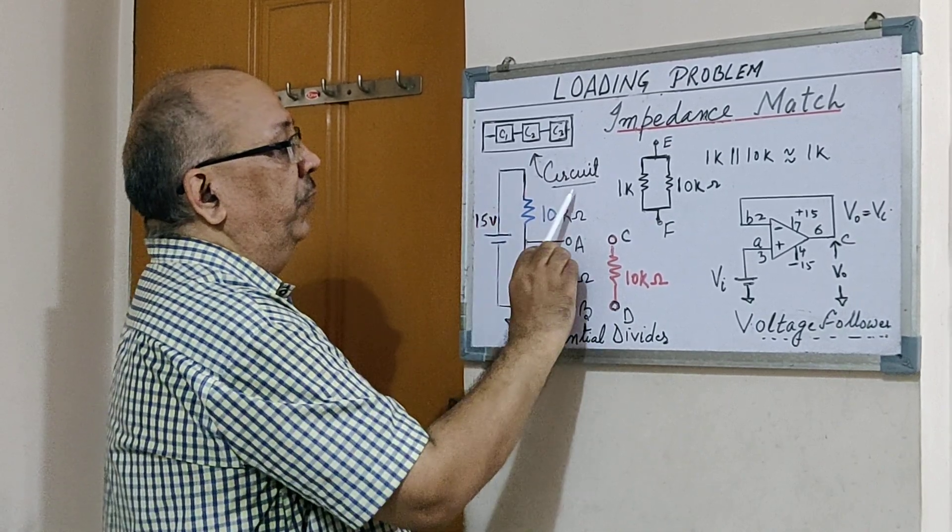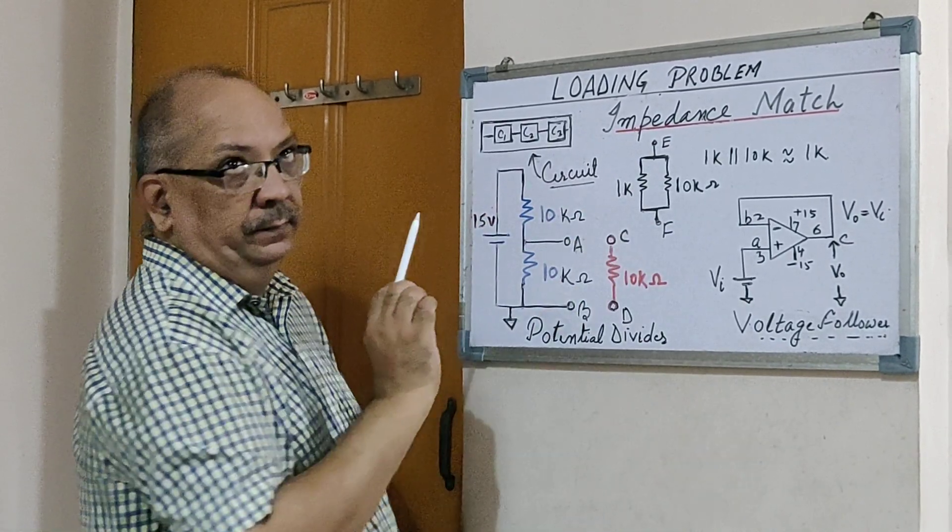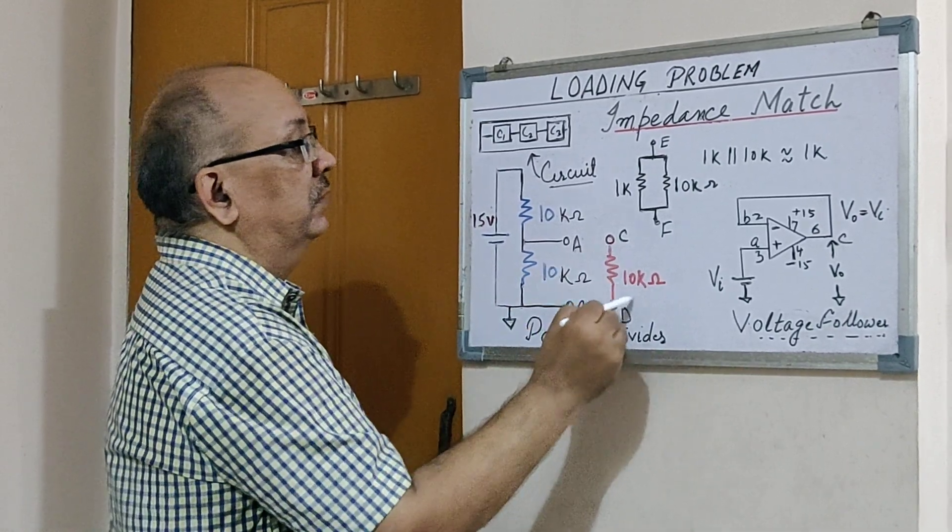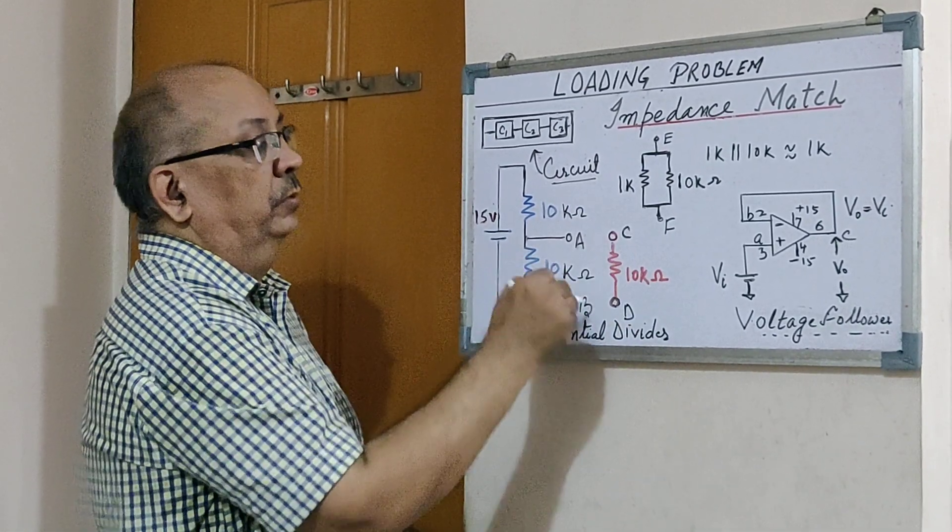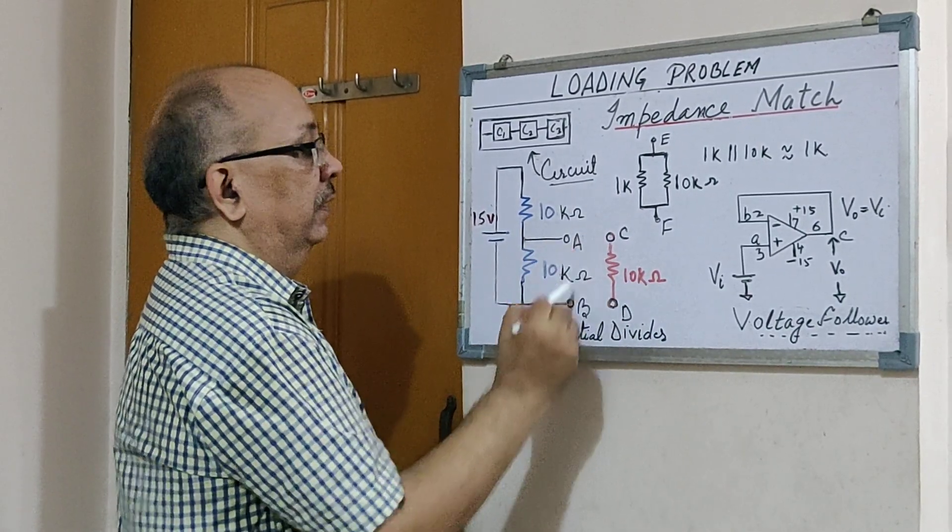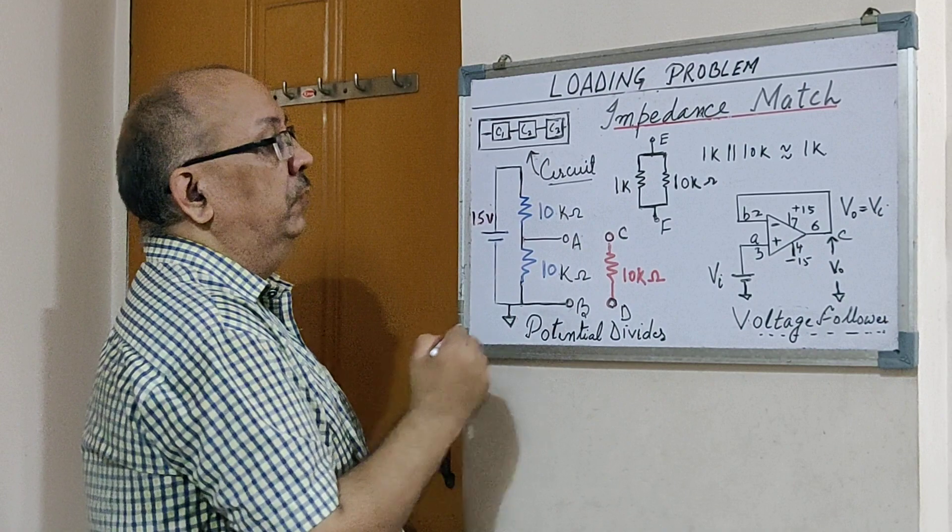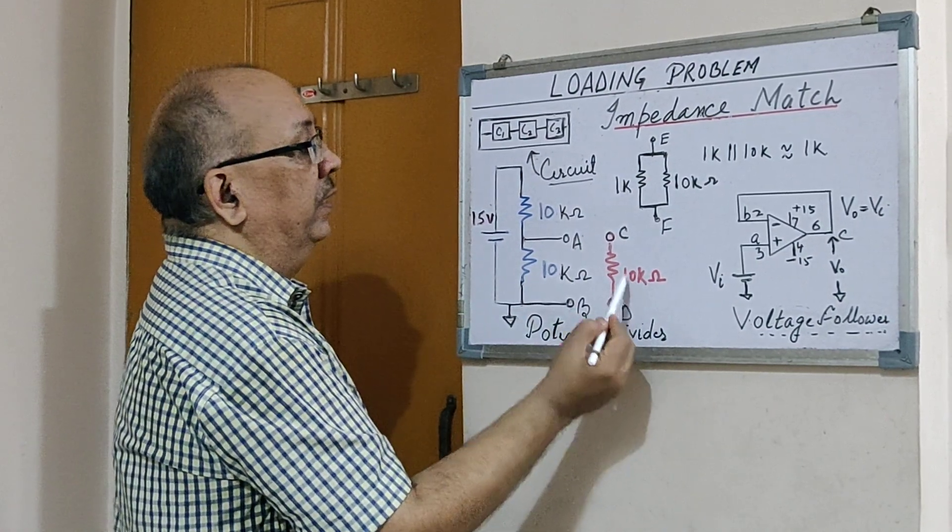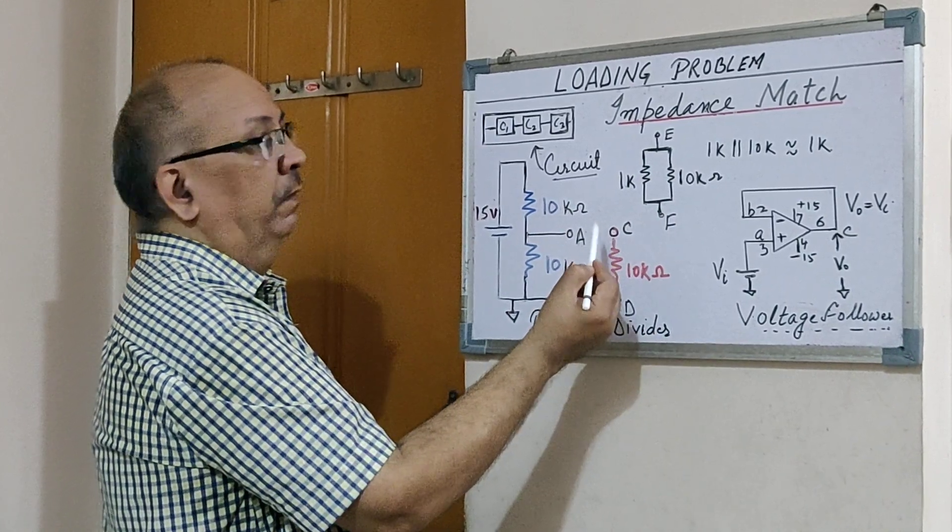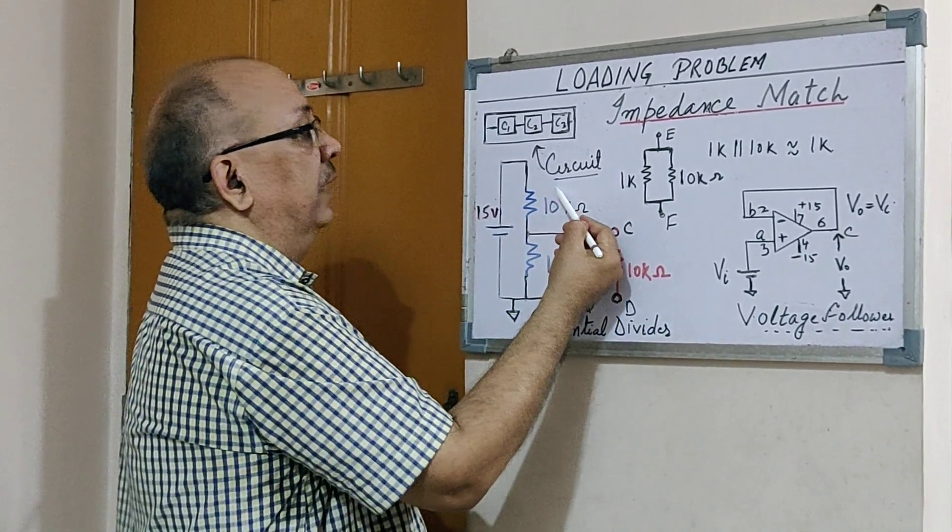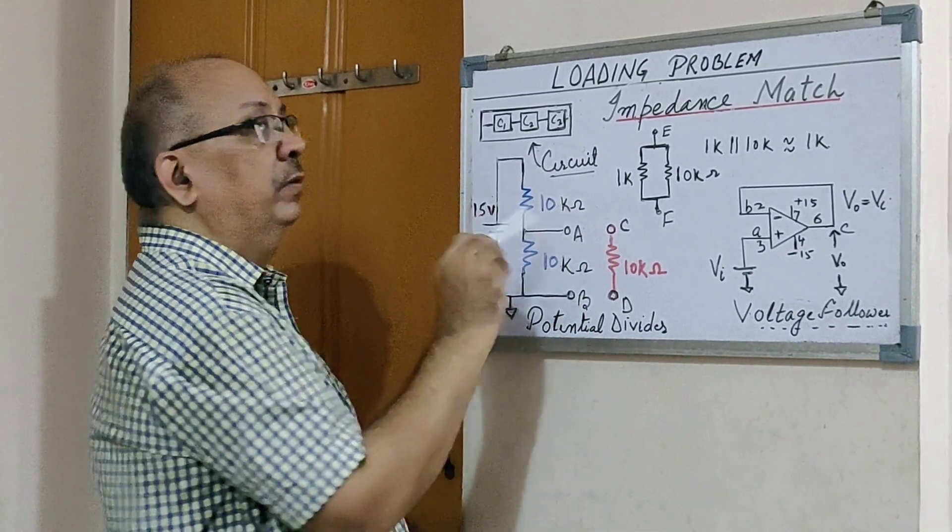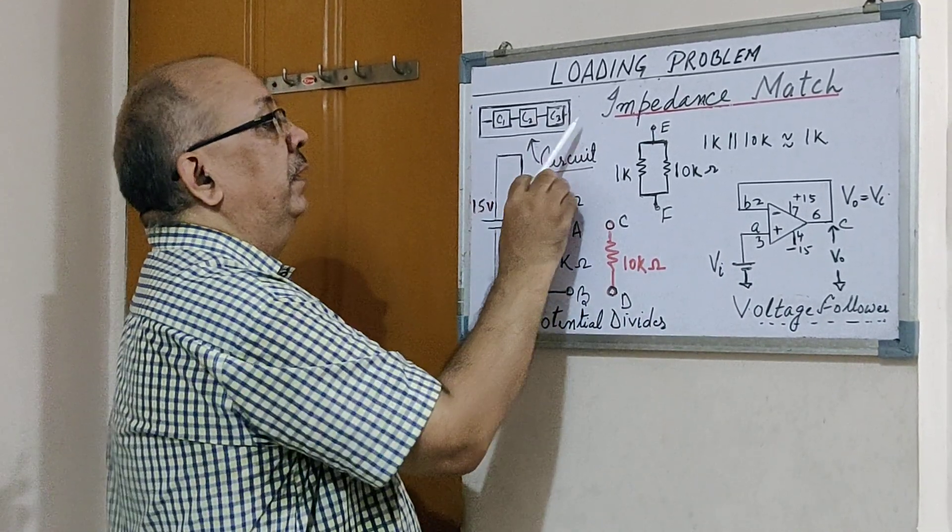is also 10k ohms. If I connect A and C, and B and D, the interesting part is the moment I connect 10k, this comes in parallel with 10k. Total becomes 5k, and the total resistance is 10k and 5k. This 15 volts will redivide and you'll get here 10 volts and here 5 volts. That means when this load was not connected, the